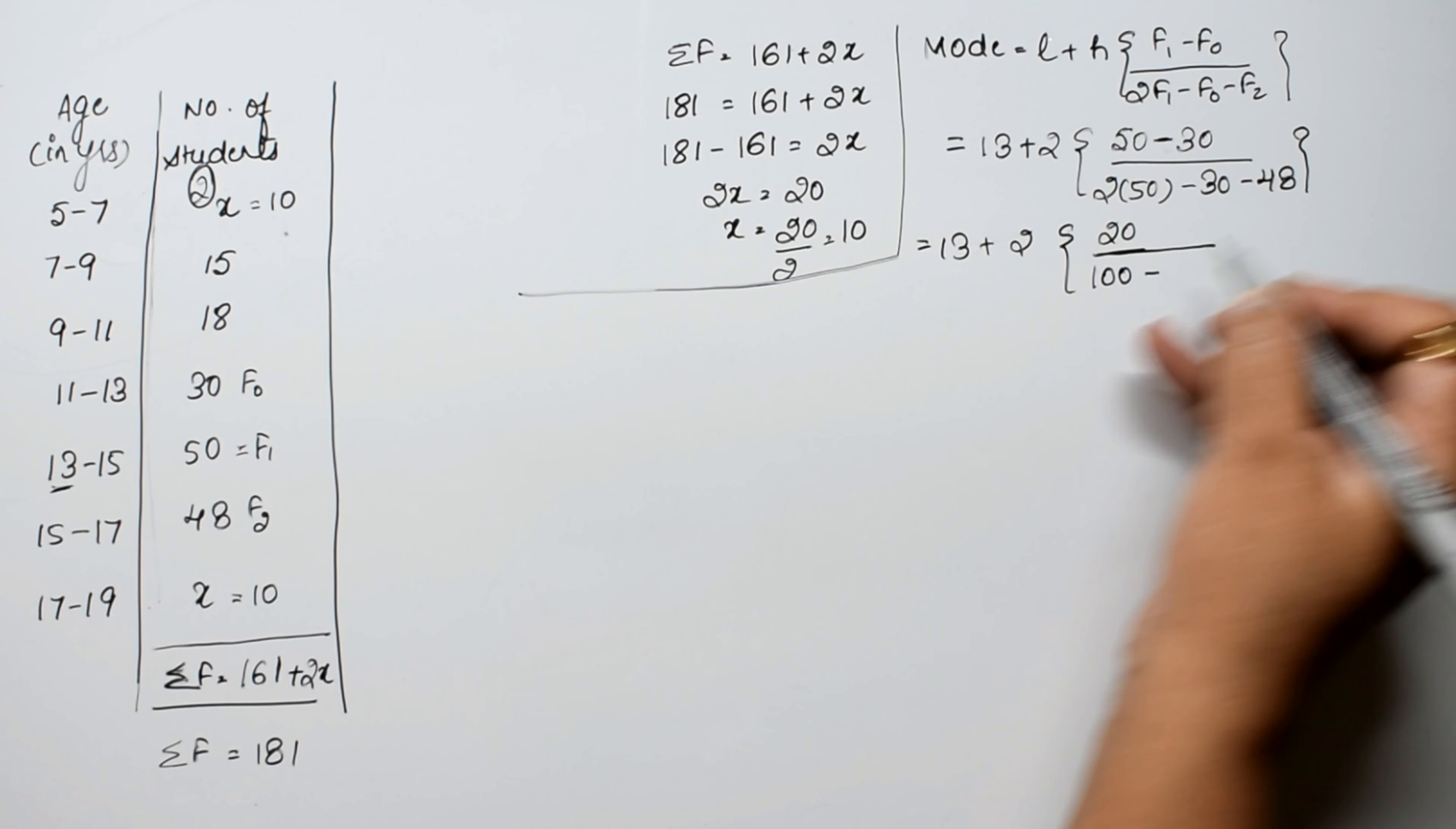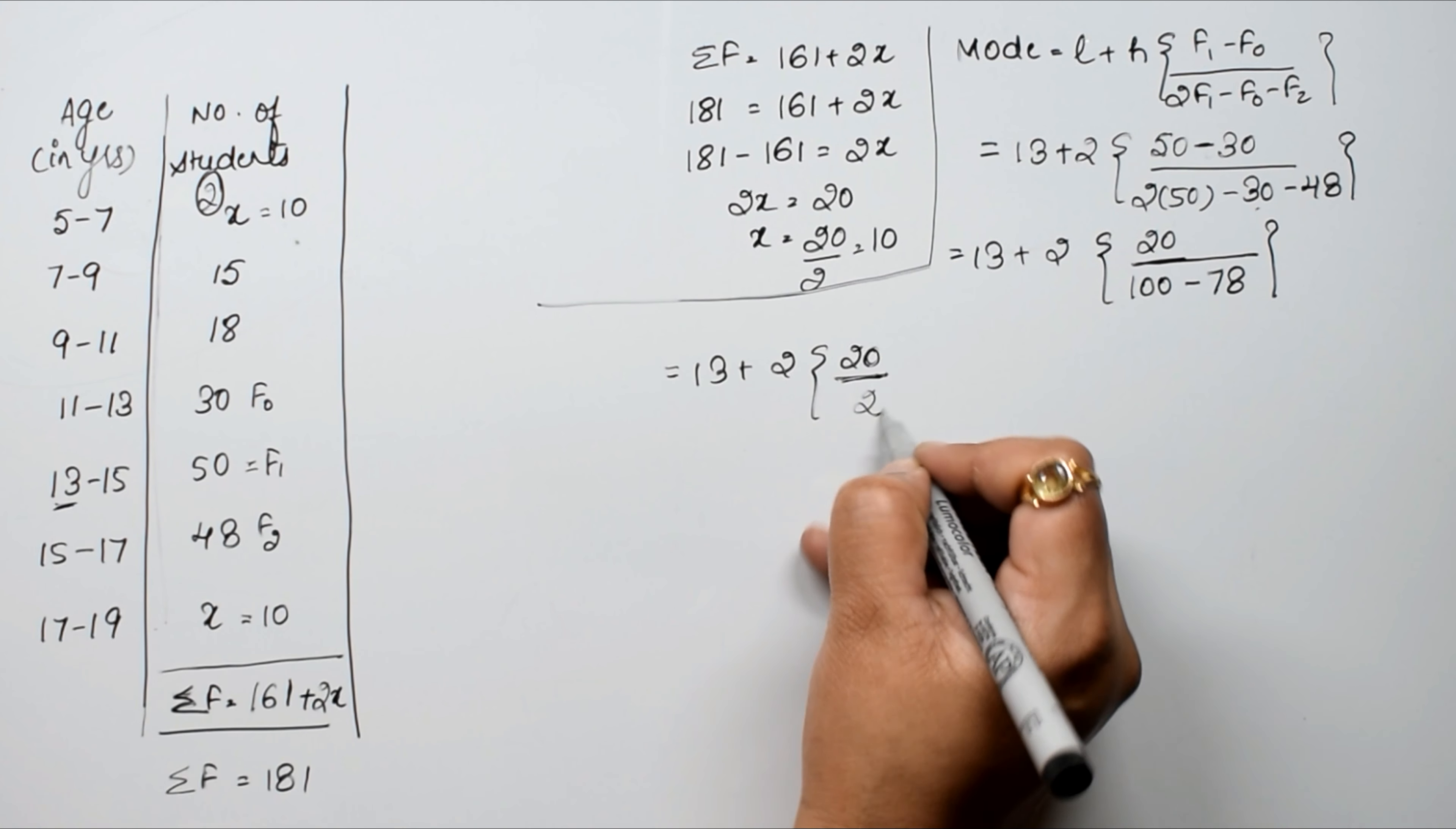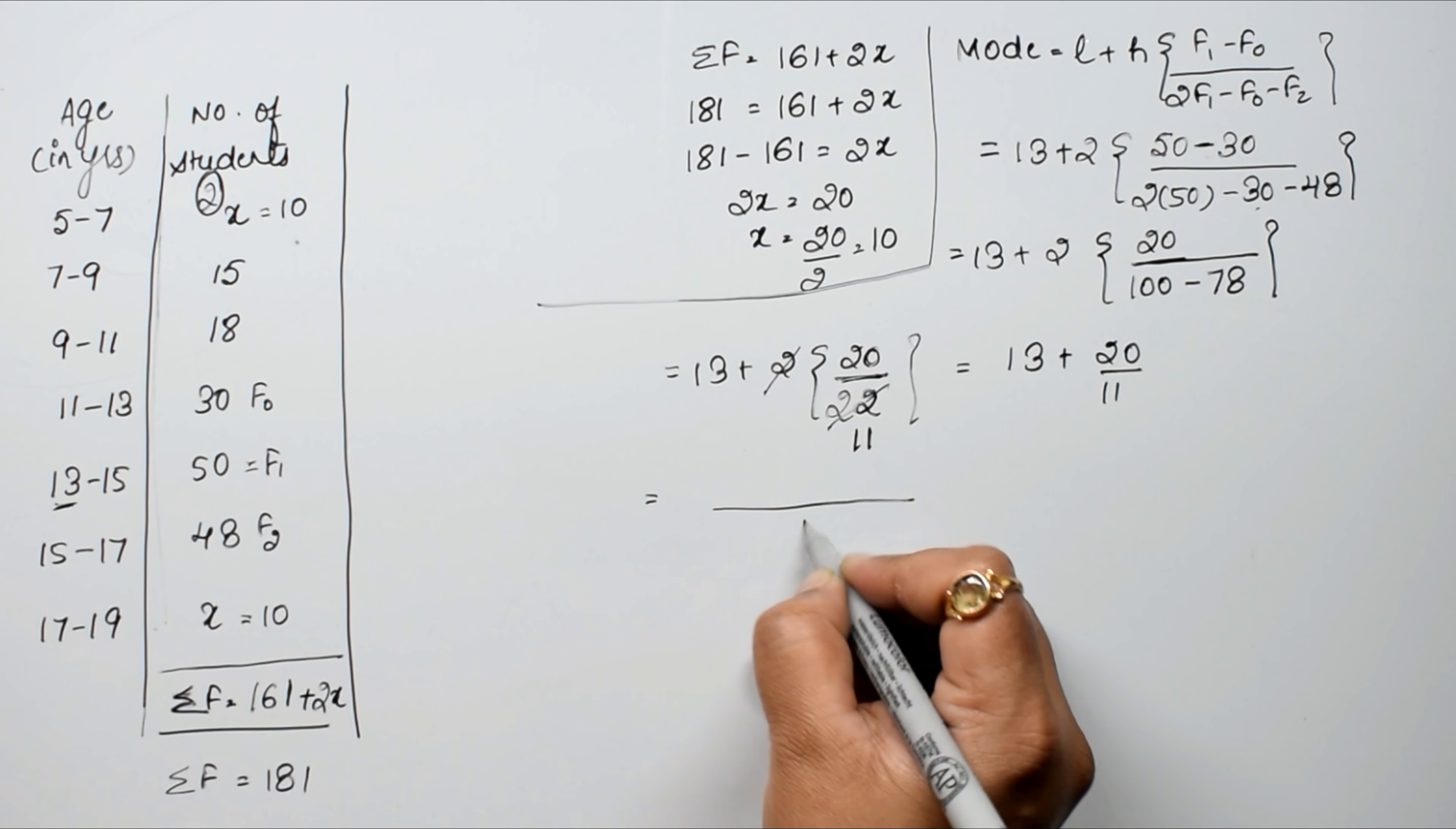Minus 78. This equals 13 plus 2 into 20 upon, 100 minus 78 is 22. So 22 upon 11 is 2. Therefore we have 13 plus 20 upon 11.